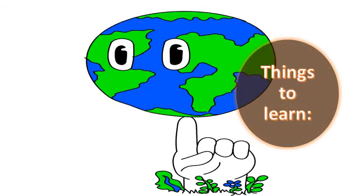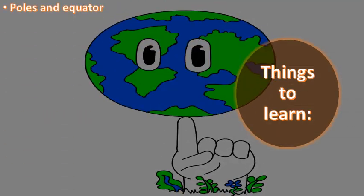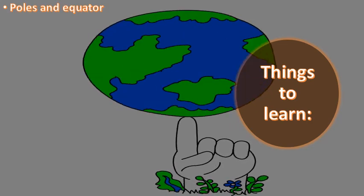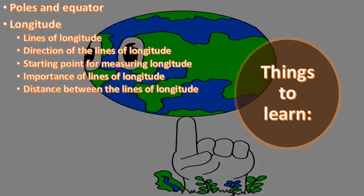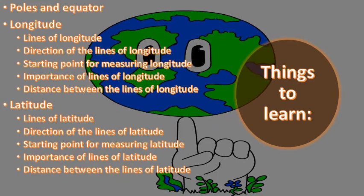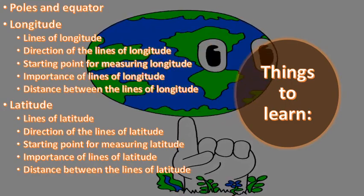Before we start, let's review the things to learn from this chapter. Number one is poles and equator — the vertical points are called poles and the horizontal midpoint is called the equator. Then we learned about longitude: what the lines of longitude are, their direction, starting point, importance, and distance between them.